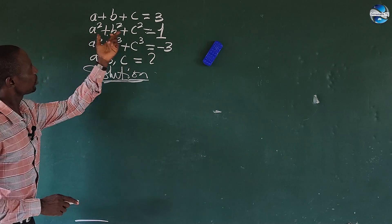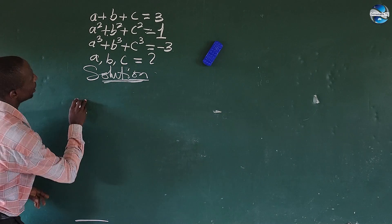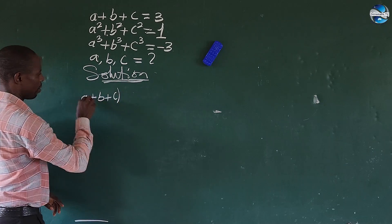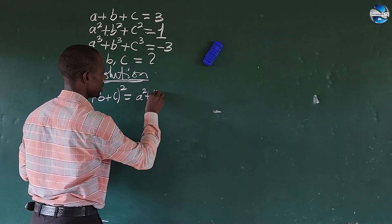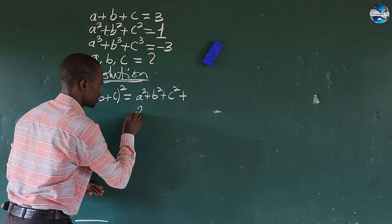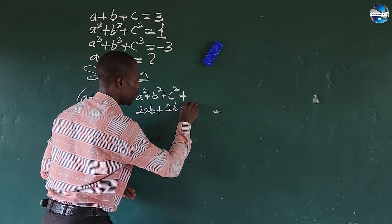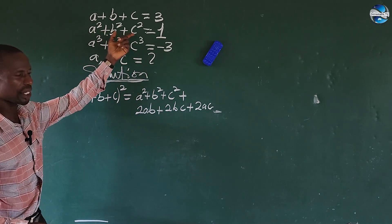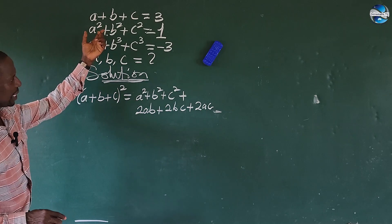The first thing we're going to do is look at this second expression. We have an algebraic identity for this. We all know that we can rewrite this expression: if we have a plus b plus c all to the power of 2, this is equal to a squared plus b squared plus c squared, plus 2ab plus 2bc plus 2ac.